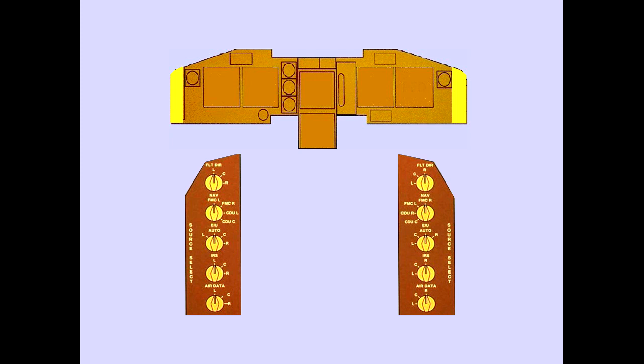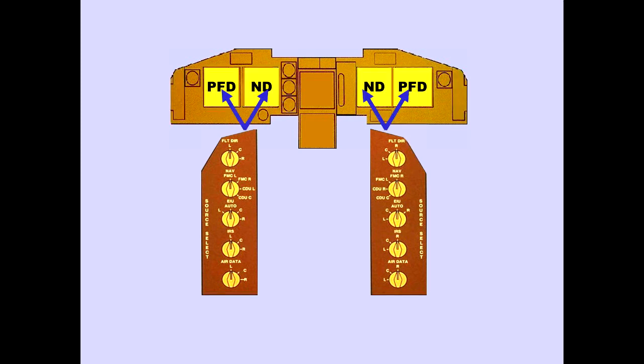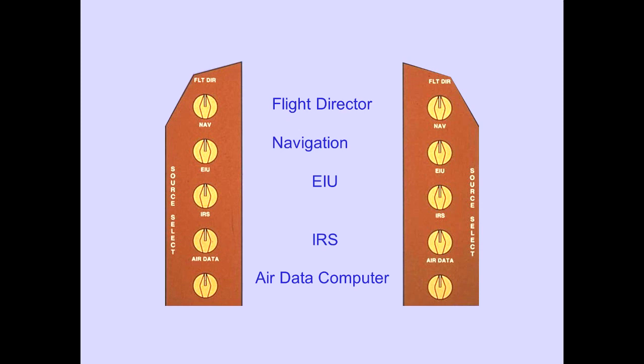Source selectors are located on the Captain's and First Officer's panels. The Captain's source selectors select the reference sources for the Captain's PFD and ND. The First Officer's source selectors select the reference sources for the First Officer's ND and PFD. The selectors select the Flight Director source, Navigation source, EIU source, IRS source, and Air Data Computer source. Now let's discuss each selector in more detail.